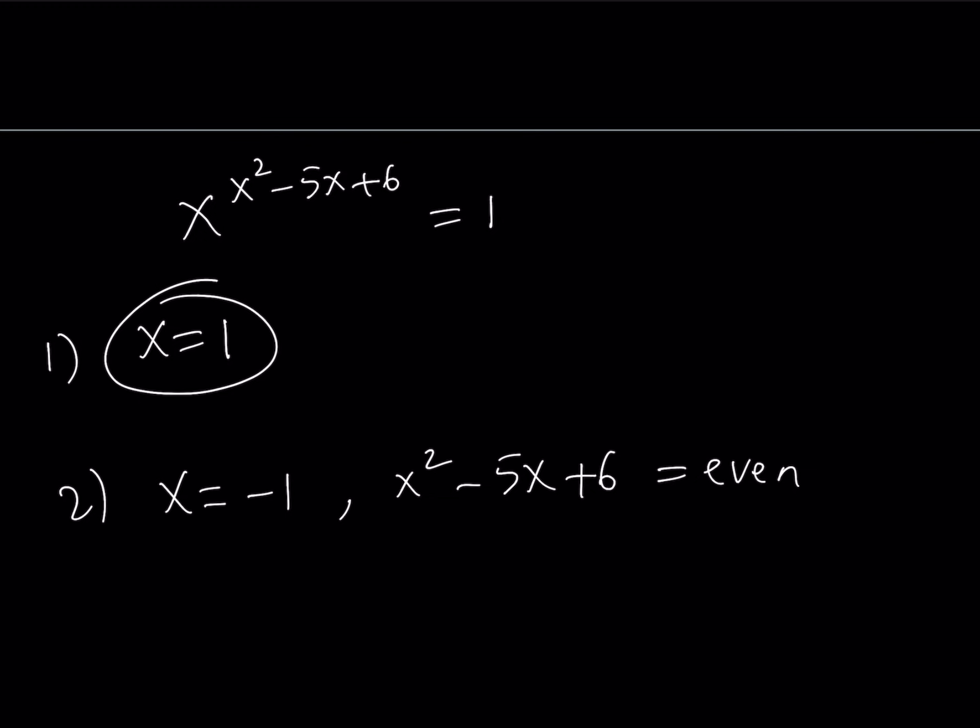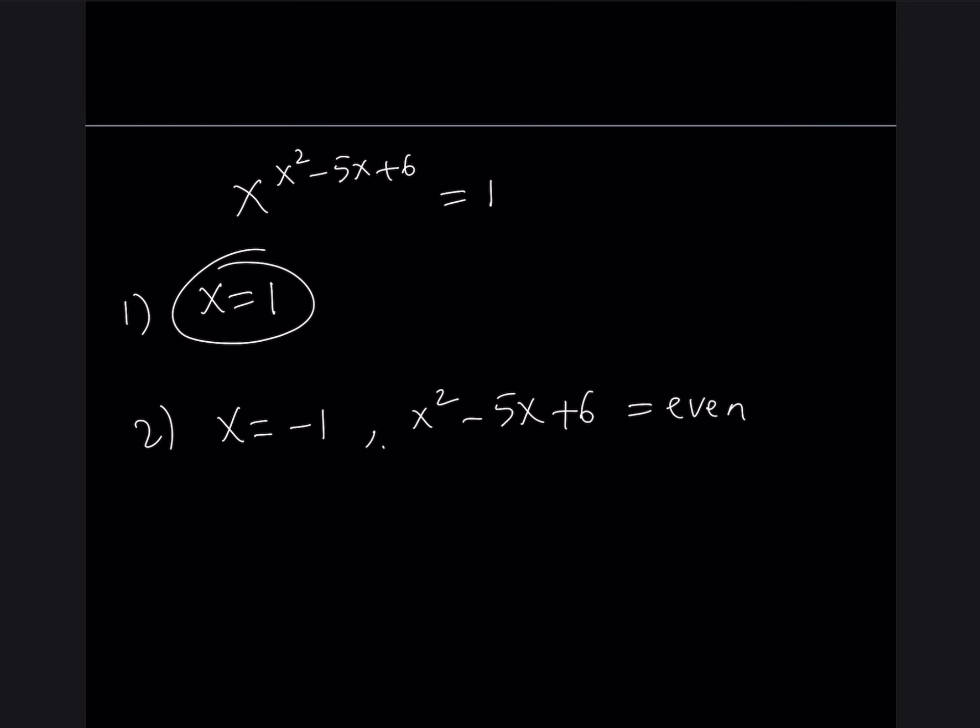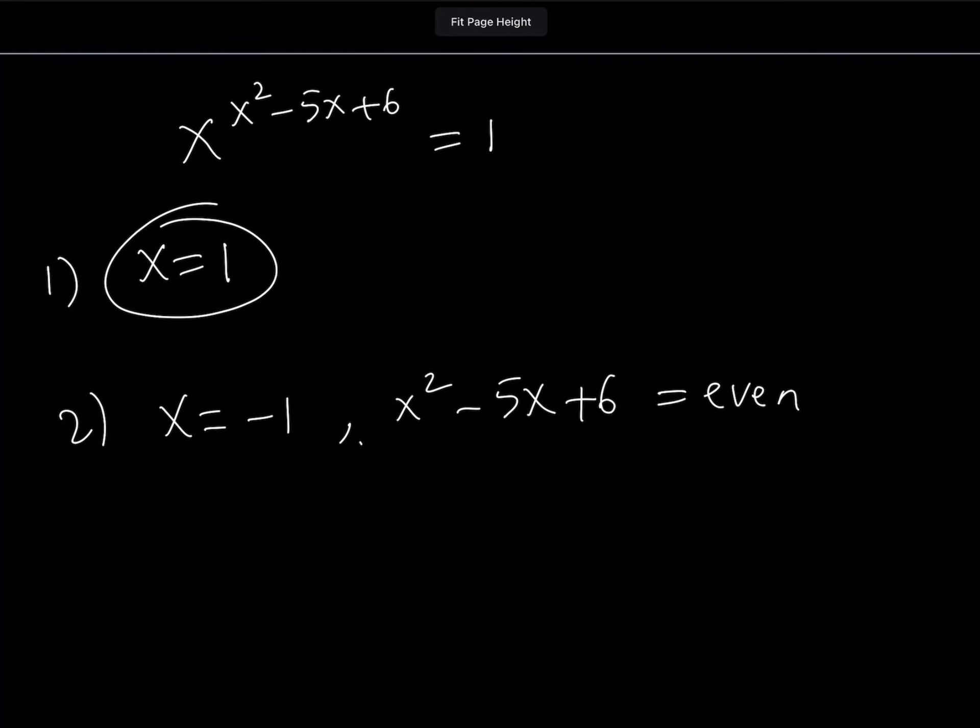But let's still check that. So let's go ahead and replace x with negative 1 here and let's see what happens. If I replace x with negative 1, I'm getting negative 1 squared minus 5 times negative 1 plus 6. This gives me 1 plus 5 plus 6 and that's equal to 12. And as you know, 12 is even. So x equals negative 1 is a valid solution as well.